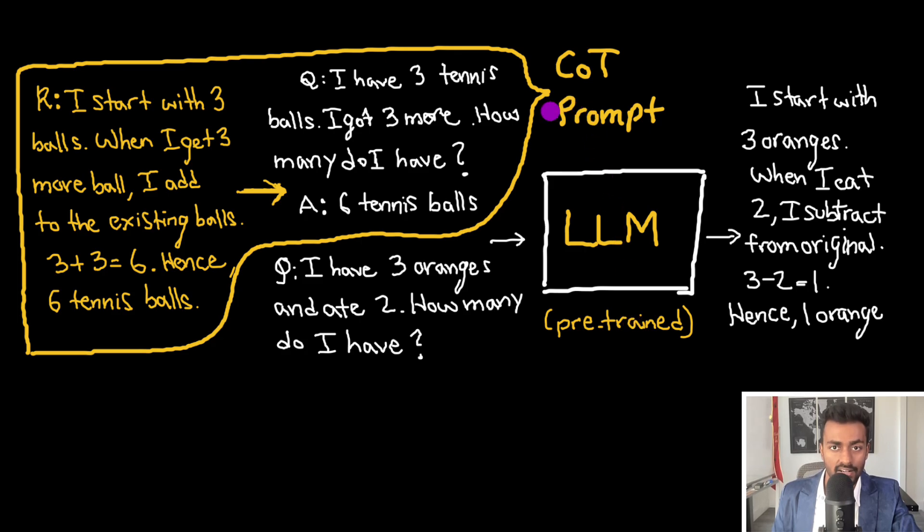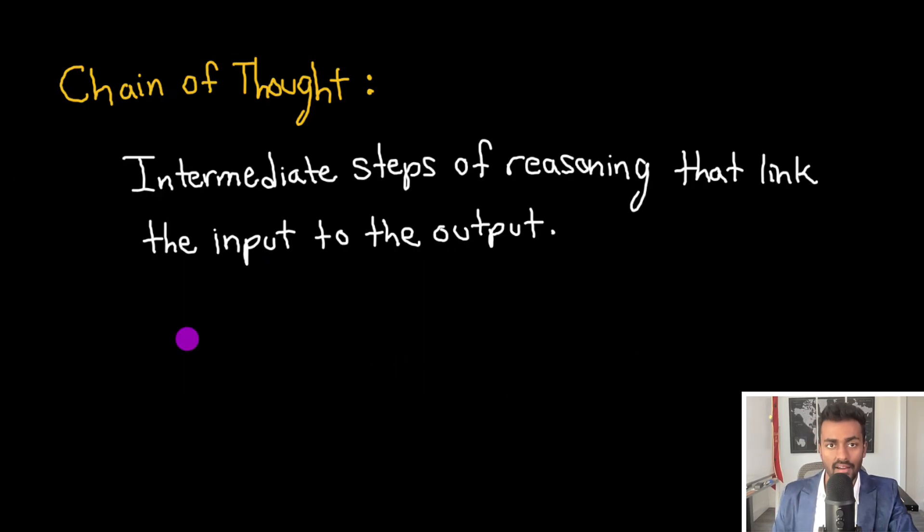And in this case, the entire chain of thought prompt is going to be this question, along with the rationale for the answer, and then the answer itself. And then we pass it along with the question that we want the LLM to actually answer. And so a chain of thought is intermediate steps of reasoning that link the input to the output. And the input could be a question, the output could be an answer.